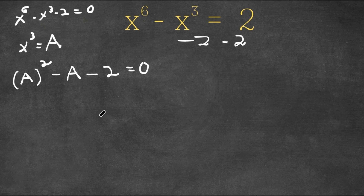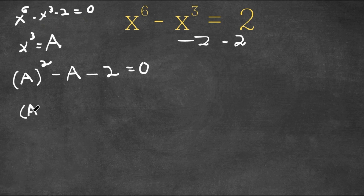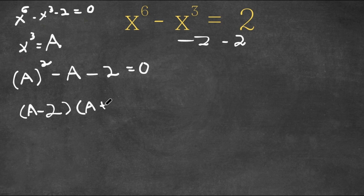So now as you see, we have a quadratic equation. So now if we factor this, we get a minus 2 times a plus 1 is equal to 0.